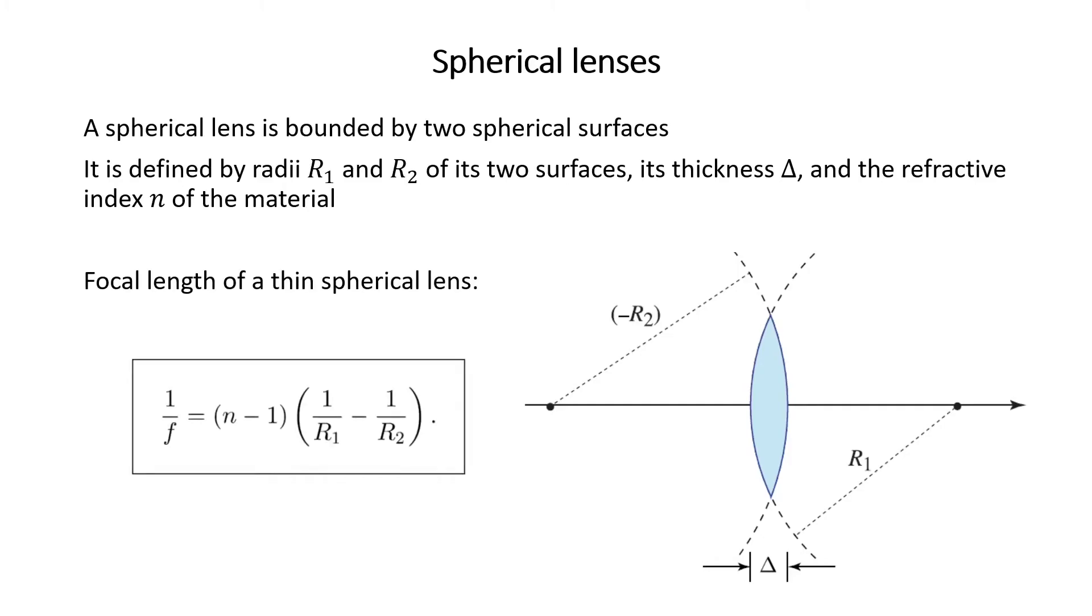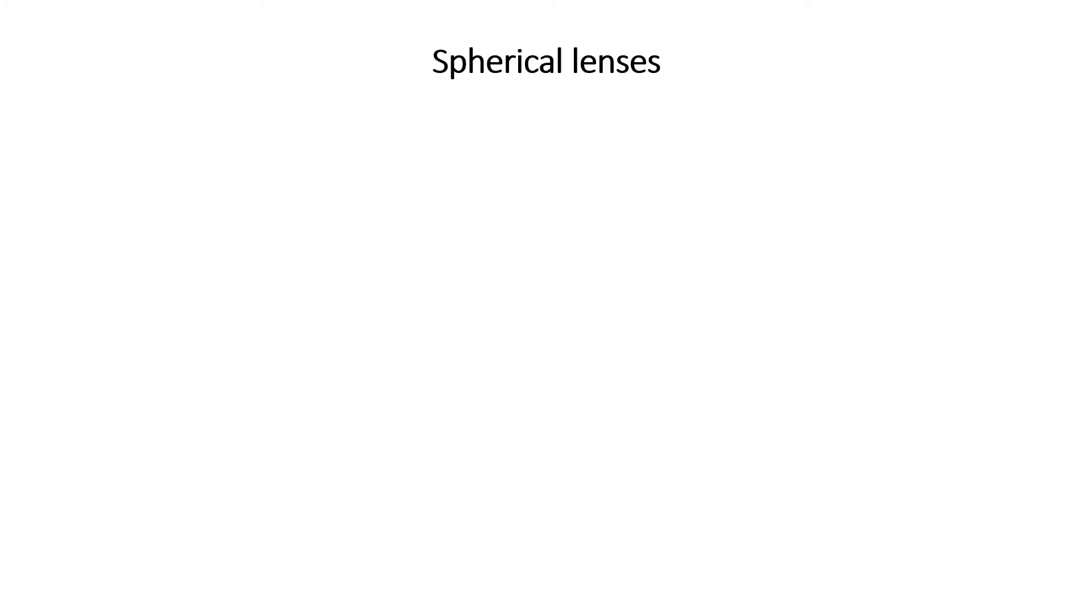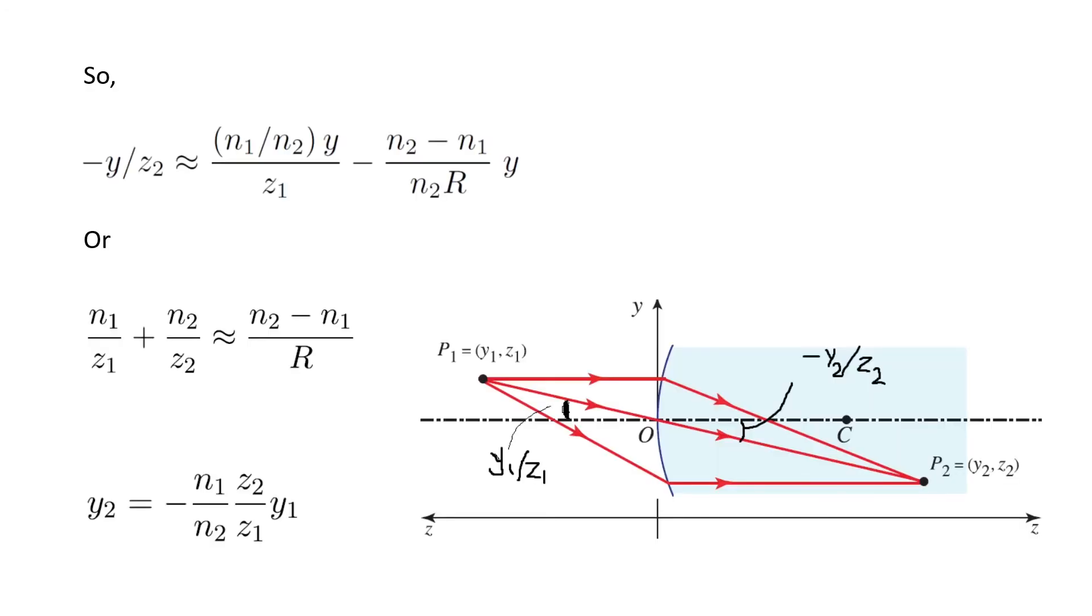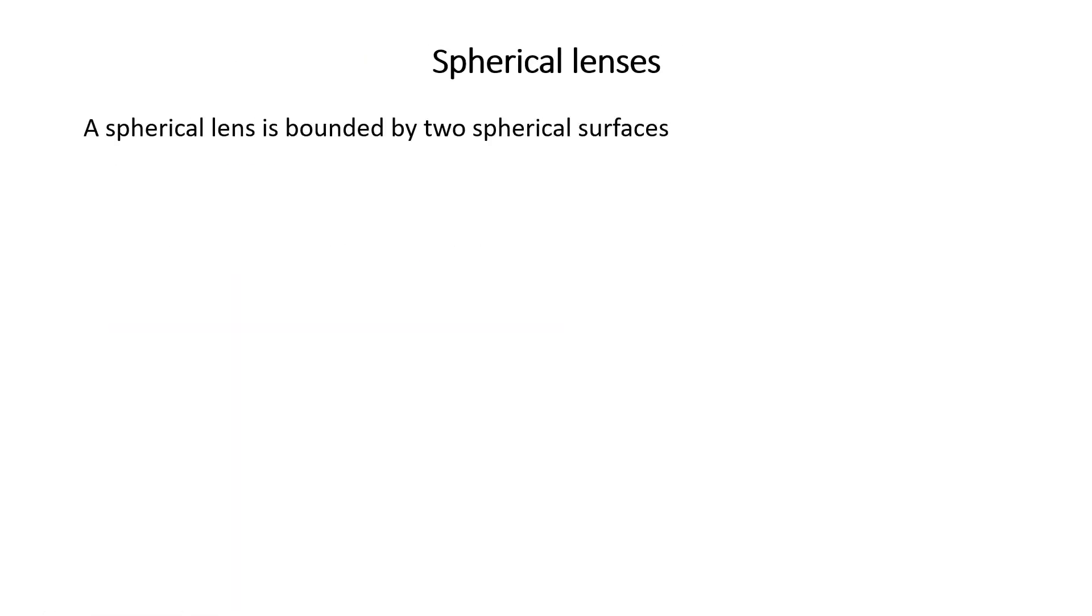The focal length of a thin spherical lens is obtained from this relation: 1 over f is (n minus 1) times (1 over R1 minus 1 over R2). You have seen this equation in University Physics 2. And we can easily obtain that by applying this equation twice.